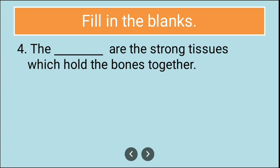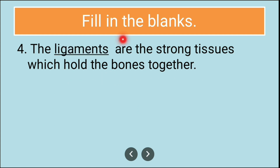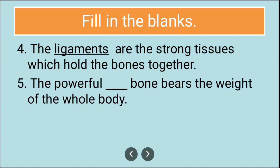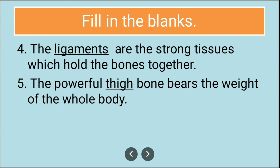Fourth fill in the blank: The blank are the strong tissues which hold the bones together. The answer is ligaments. Fifth: The powerful dash bone bears the weight of the whole body. The answer is the thigh bone — the powerful thigh bone bears the weight of the whole body.